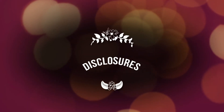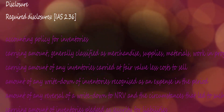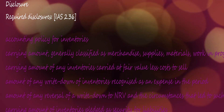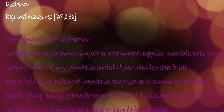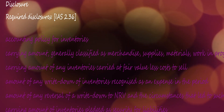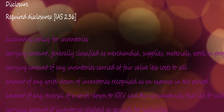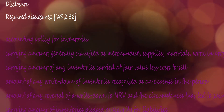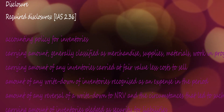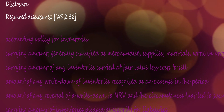Required disclosures under IAS-2 include: the accounting policy for inventories; the carrying amount, generally classified as merchandise, supplies, materials, work in progress, and finished goods; the carrying amount of any inventories carried at fair value less costs to sell; the amount of any write-down of inventories recognized as an expense in the period; the carrying amount of inventory pledged as security for liabilities; and the cost of inventory recognized as an expense, which is cost of goods sold. These are the main disclosures you encounter in IAS-2 inventories.